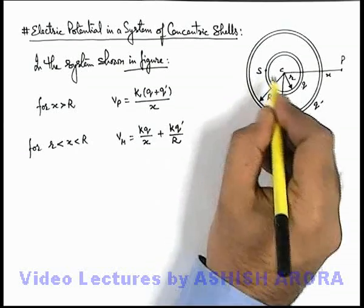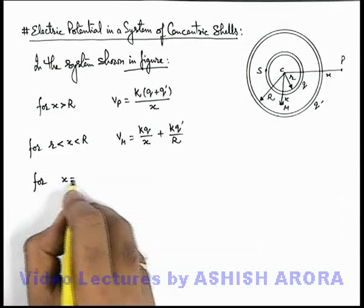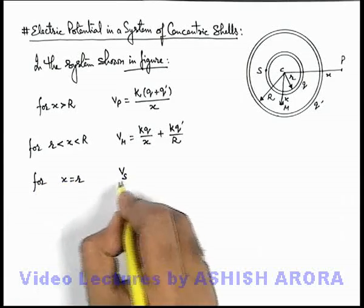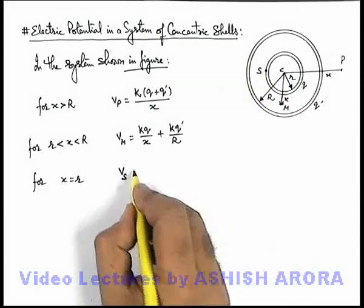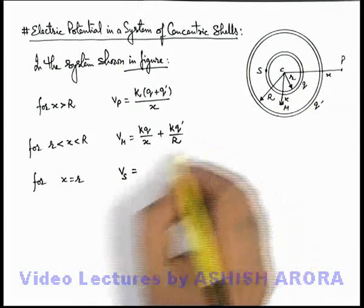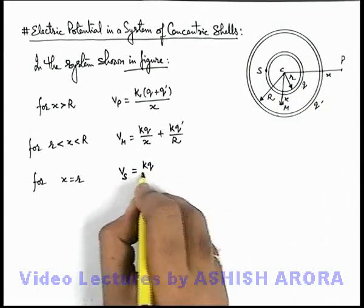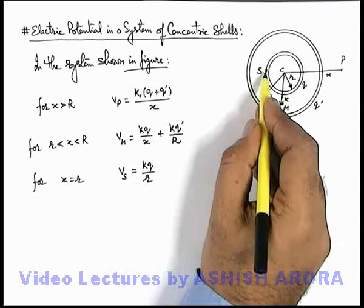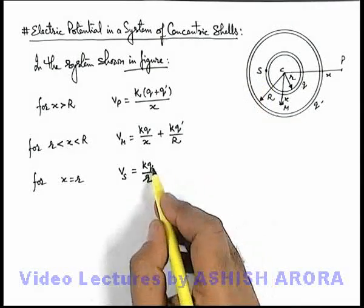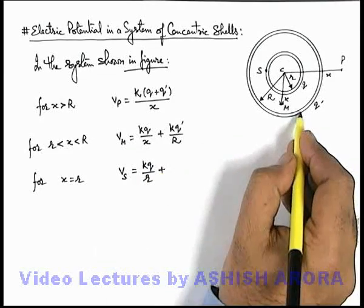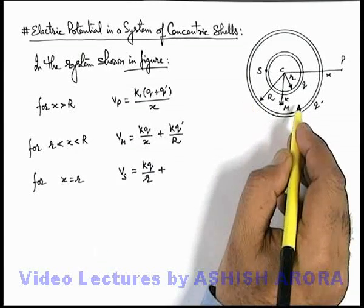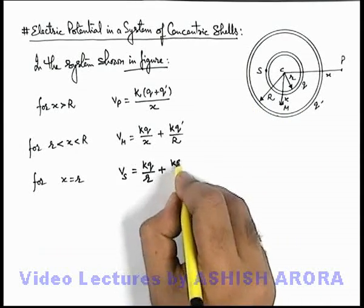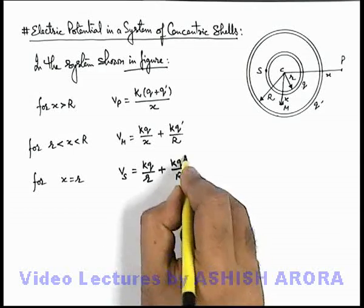If we consider a point S on the surface of the inner shell, then x equals small r. At point S, due to charge q on the inner shell, the potential is kq / small r, since on the surface of a uniformly charged shell the potential is kq/r. Plus the potential due to the outer shell, which remains equal to that of its outer surface for any interior point, so it is kq dash / capital R. Total potential at S is kq/r + kq dash/R.